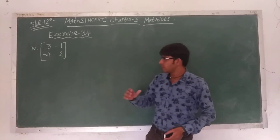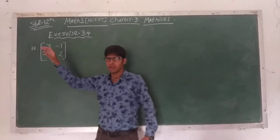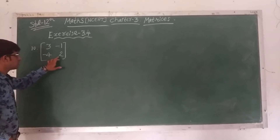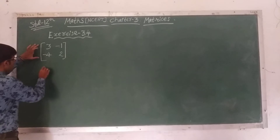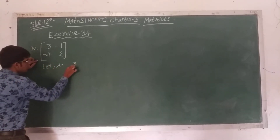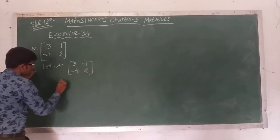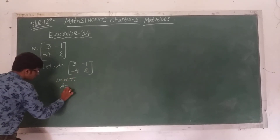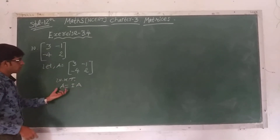Good morning friends. Last time we had to complete an exercise defense for question number 9. Now I will start question number 10: the matrix is 3, -1, -4, 2. We have to find the inverse of the given matrix. So let A equal to [3, -1; -4, 2]. We know that A equals I times A. Now putting the value of A and I: